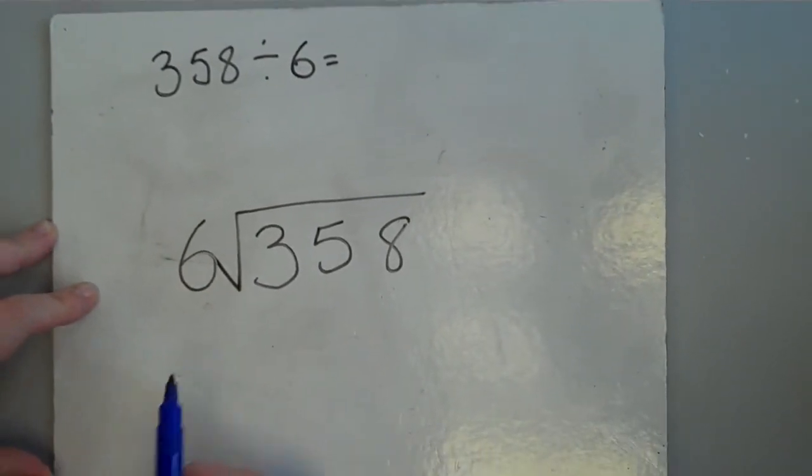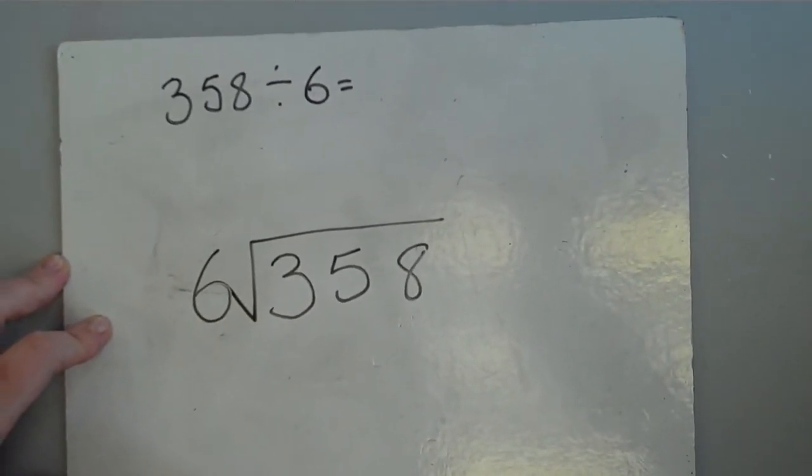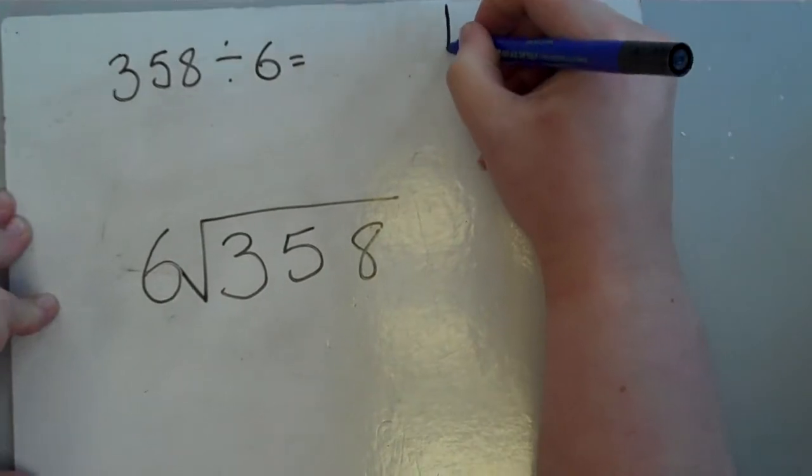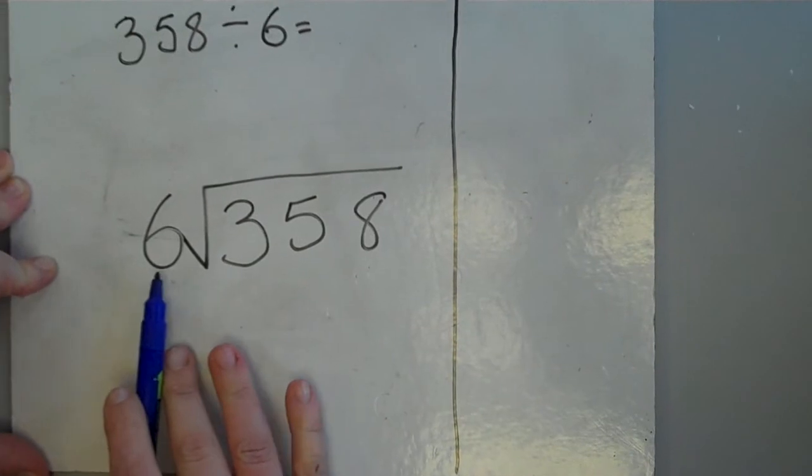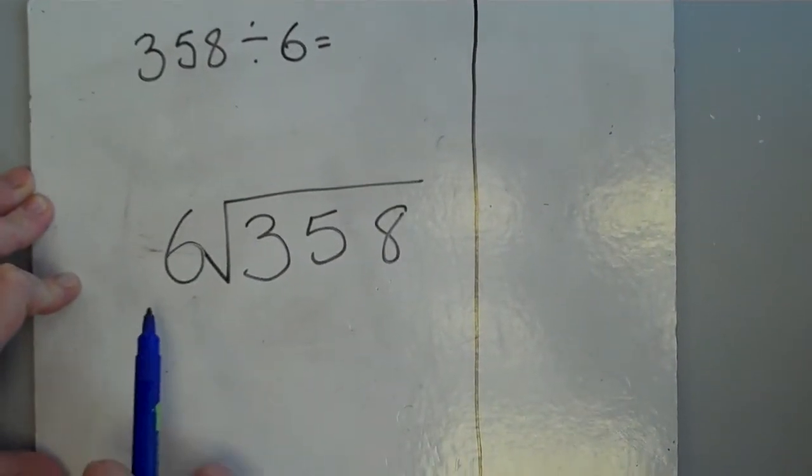Once we've done this, to help our mind as we go through this calculation, we're going to draw a jottings box down the side of our page, in which we are going to jot down the 6 times table. That's going to help us as we go through the method.